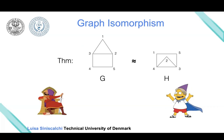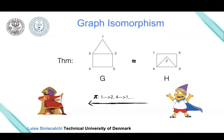Let's proceed and construct a proof for our theorem. The prover wants to prove to the verifier that G and H are actually isomorphic. A simple way to do that is just to send the permutation we saw before to the verifier.